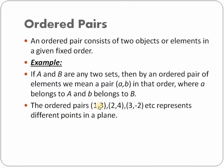So this is how ordered pairs are represented — the first element comes from the first set and the second element comes from the second set. For example, the ordered pairs (1, 3), (2, 4), (3, -2), etc., represent different points in a plane — different coordinates. The first element here represents your X value along the X-axis, and the second element represents the Y value along the Y-axis. So all these coordinates are given in a particular order. These are examples of ordered pairs.